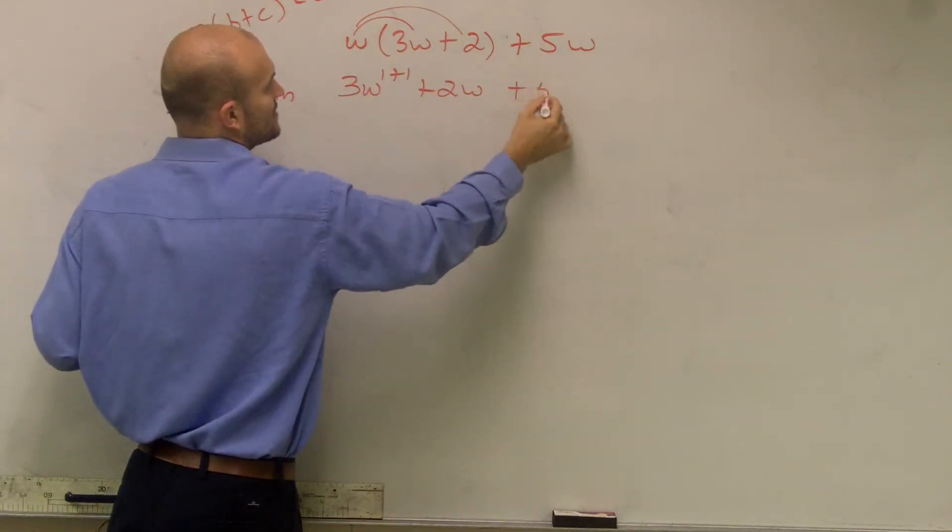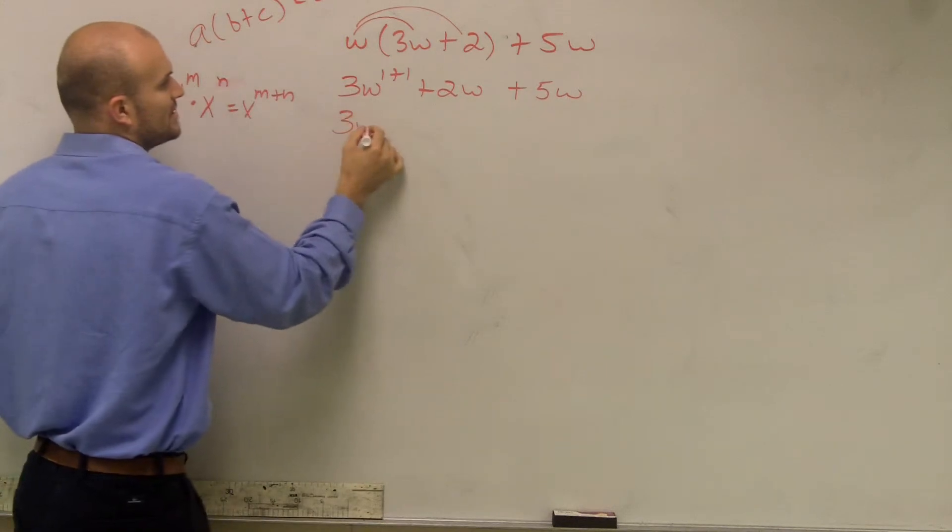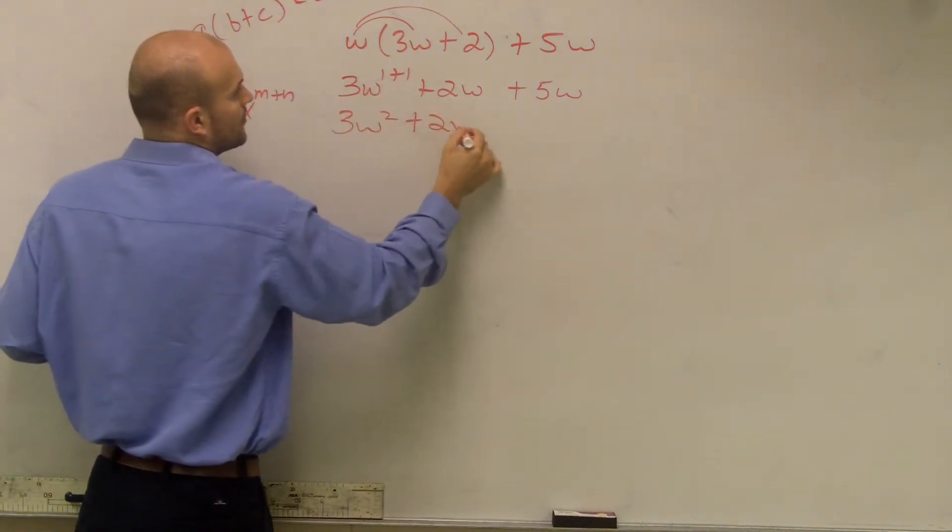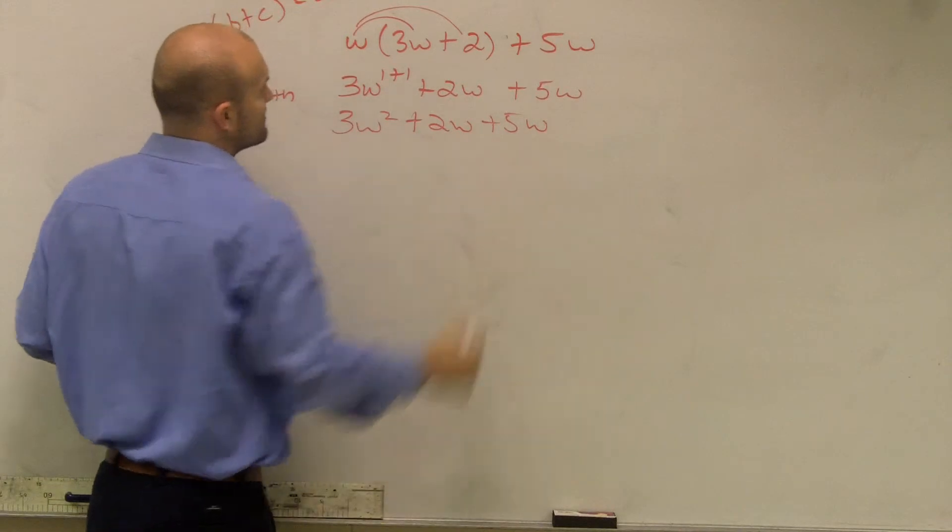And then over here, we still have a 5w outside of there. Well, obviously, 3w squared, 1 plus 1 is 2, plus 2w plus 5w.